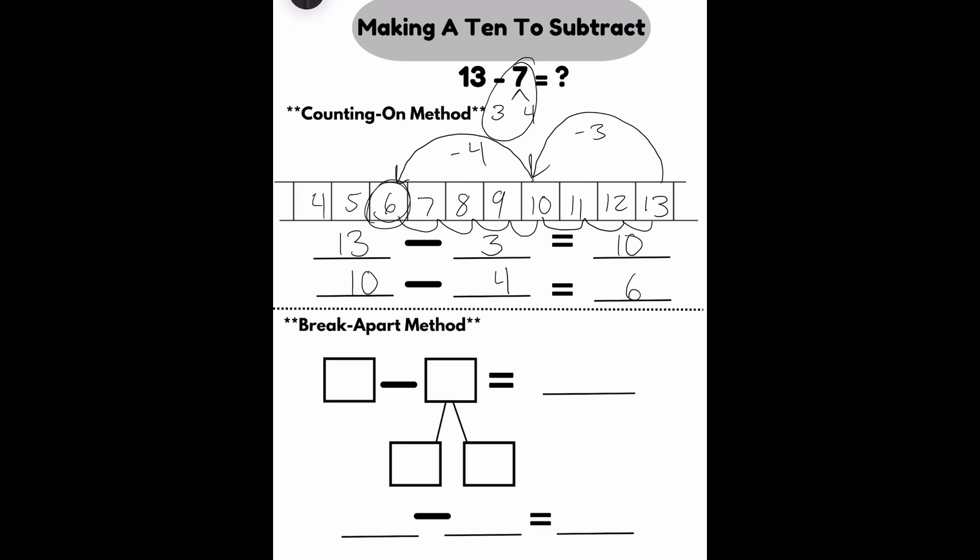Looking at the break apart method. I need to write my original equation on top. 13 minus 7. I don't know what that is. So I'm going to focus on making a 10. I need to ask myself, 13 minus what makes 10? In this case, we know that's 3. 13 minus 3 will make 10.